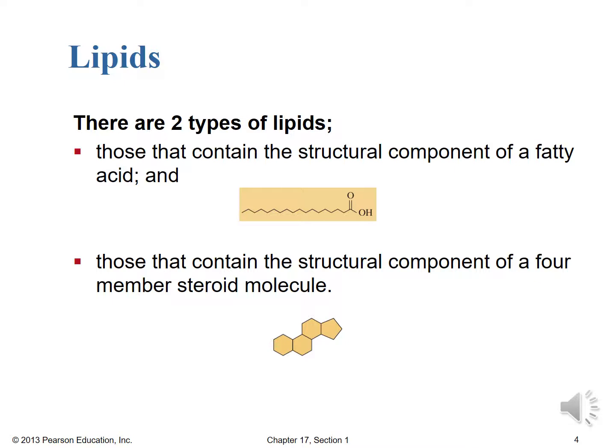The other main type of lipid has the structural component of a four-membered steroid molecule — that fused four-ring system. That's cholesterol, and it's also the basis of many sex hormones like testosterone. When discussing lipids in general, we recognize two main types: the long-chain fatty acids and triglycerides, and then the steroid-type molecules important as lipids like cholesterol, and as hormones like testosterone, based on that four-ring structure.